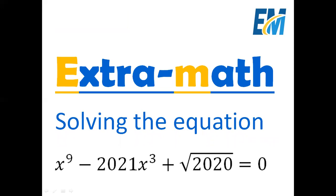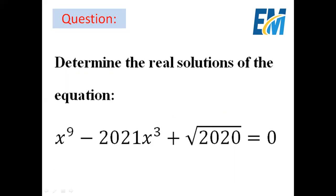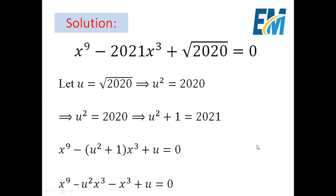Hi everyone, it's XtraMark. Today we will solve an equation of degree 9, which is x to the power 9 minus 2021 x cubed plus square root of 2020 equals 0. To simplify, let us take square root of 2020 as u.